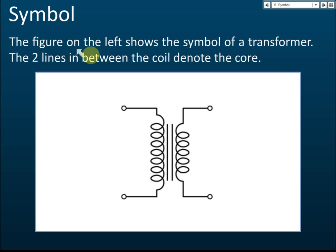The figure shows the symbol of a transformer. You can see there is a coil on one side, a coil on the other side, and two lines in the middle. The two lines between the coils denote the core. So we have the primary coil, the core, and the secondary coil. When you see this symbol in an exam, you should recognize it as a transformer used to increase or reduce voltage.